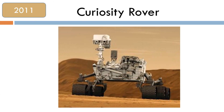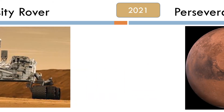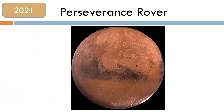In 2011 the Curiosity rover landed on Mars to explore the landscape. The Curiosity rover sends information back to Earth. And more recently in 2021 the Perseverance rover successfully landed on Mars to continue exploring the Red Planet.